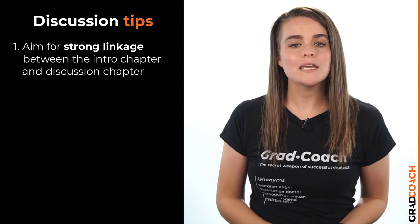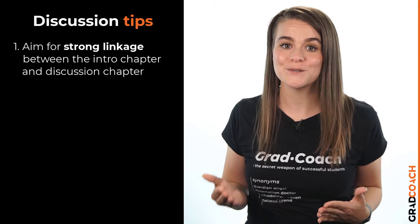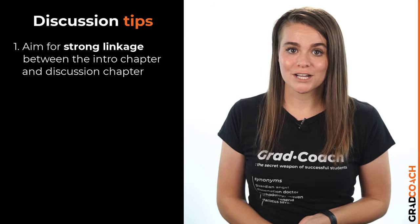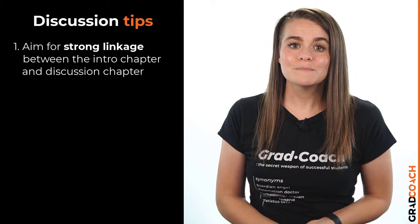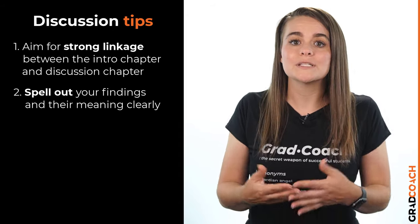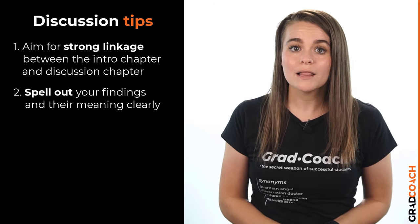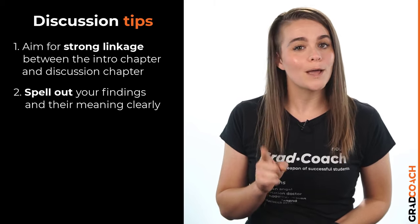Now that you understand what the discussion chapter is about, what to include and exclude, and how to structure and write it up, here are some closing tips to help you craft a quality discussion chapter. Number one: when you write up your discussion chapter, try to keep it consistent with your introduction chapter, as some readers will skip from the introduction directly to the discussion — revisit your introduction to make sure there is a good flow between the two. Number two: do not make assumptions about your readers. As the researcher, you have hands-on experience with the data, so it can be easy to present it in an oversimplified manner. Make sure that you spell out your findings and interpretations for the intelligent layman and connect the dots for your reader.